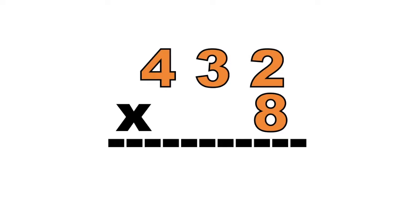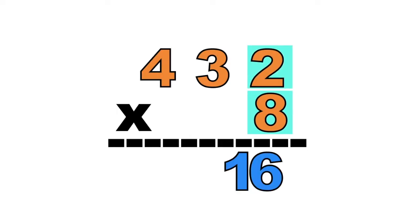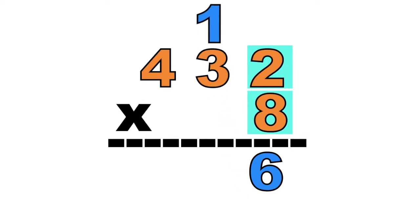So we're going to multiply 8 on each digit of the first factor. 8 times 2 equals 16. So we're going to carry 1 at the 10th place.